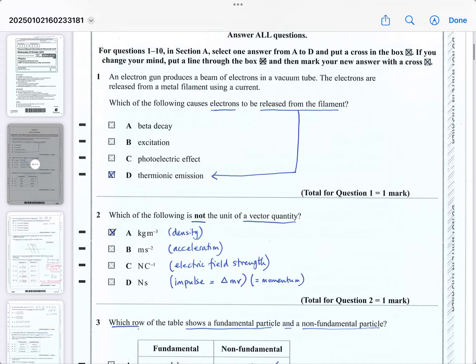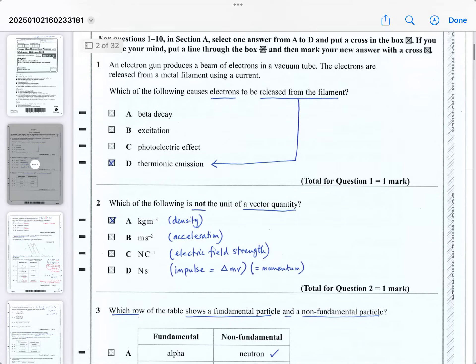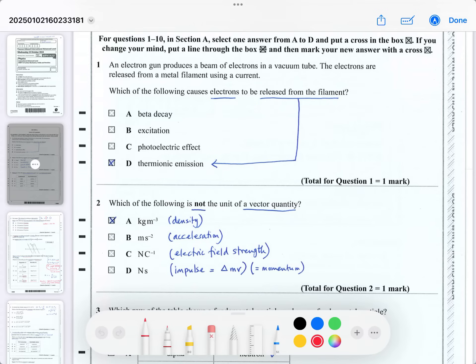The first question is, which of the following causes electrons to be released from the filament? That's just a very common multiple choice question. I've noticed it comes up quite often. The answer is thermionic emission. So this is just a knowledge question. If you don't know what thermionic emission is, you need to make sure you have it in your revision notes. Basically it's to do with what they call an electron gun. An electron gun produces a beam of electrons. For it to be able to make the beam of electrons, they first got to be emitted and thermionic emission means emitted using heat. Once they're emitted, they're then accelerated with a positive potential difference.